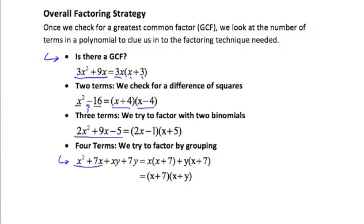We pair the first two terms together and look for a greatest common factor. x is the greatest common factor, so we factor that out front. Now let's look at the second pair of terms and find their common factor — it's y. Factoring y out front gives us y times x plus 7. Now we're down to two terms, and they both share a common factor of x plus 7. We factor x plus 7 out front: when we factor it from the first term, x is left; from the second term, y is left. That's how we factor by grouping when we have four terms.